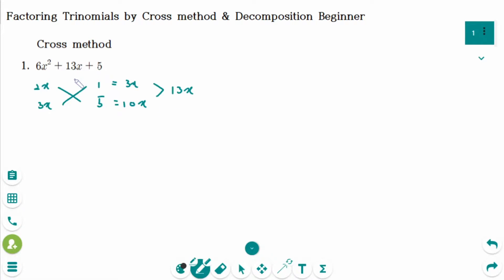The middle term is same. To write down the answer, go this way. So 2x plus 1 and 3x plus 5.